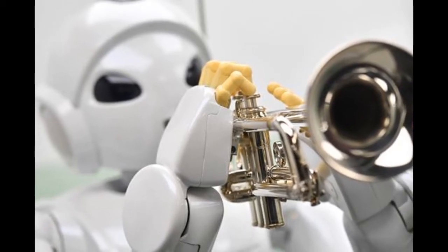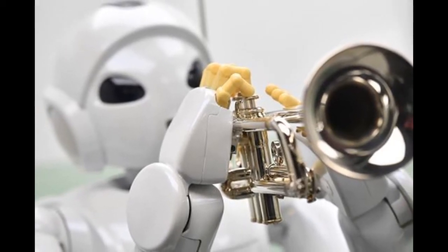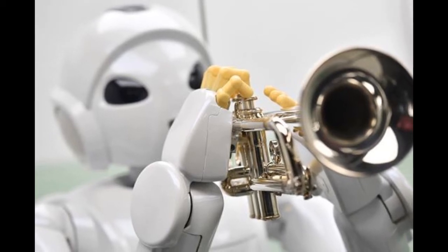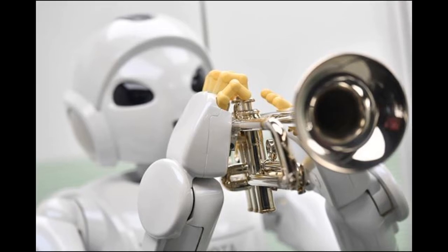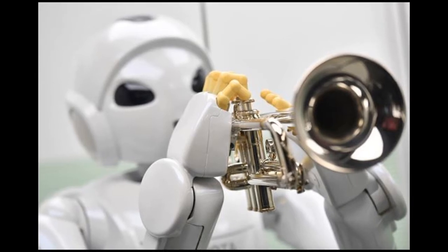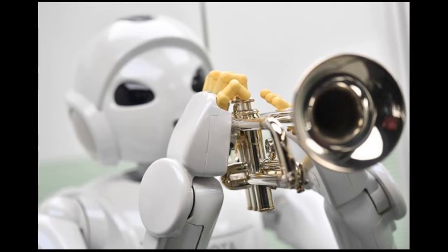500 years of robots go on show in London. Take a lip-syncing monk from the 16th century or a cartoon-like humanoid avatar that helps children with autism today. They and 100 other robots on display at the Science Museum chart an evolution of machines that fascinate and terrify in equal measure.